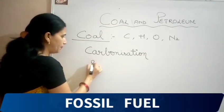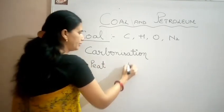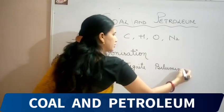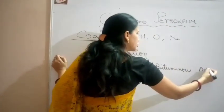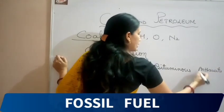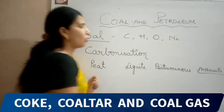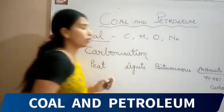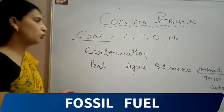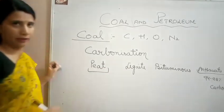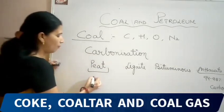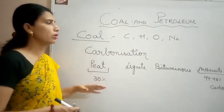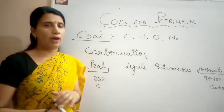There are four types of coal: peat, lignite, bituminous, and anthracite. Among these four, the best quality coal is anthracite because it contains about 94 to 98 percent carbon, so it burns with very little smoke. The poorest quality of coal is peat, which contains very less carbon — approximately 30 percent — so it produces a lot of smoke. Anthracite produces very little smoke when burned.